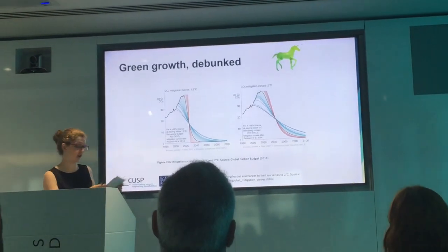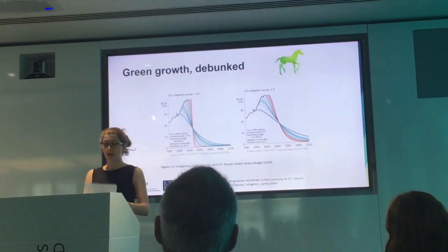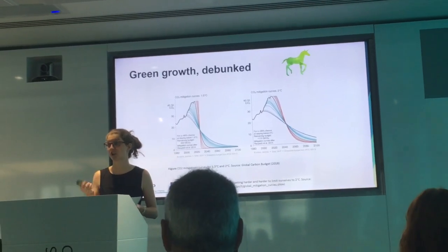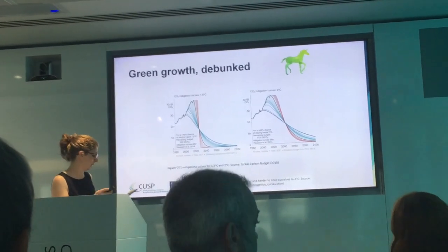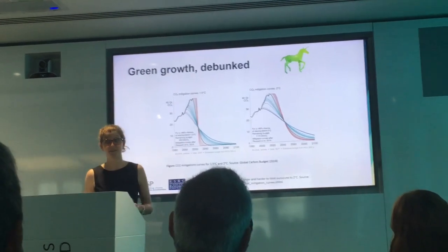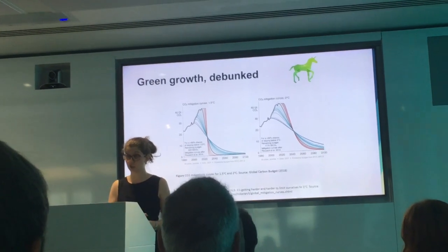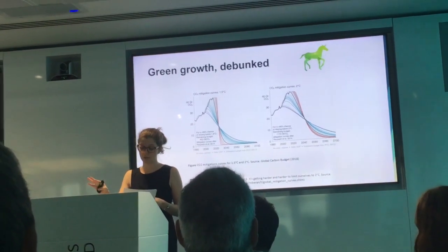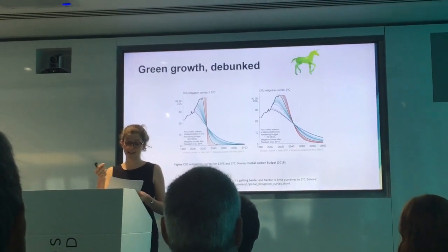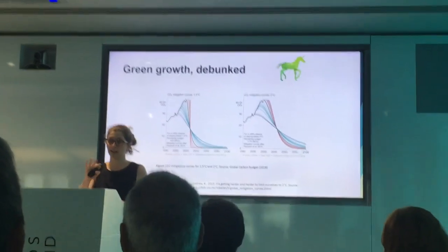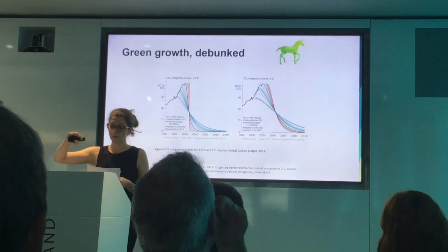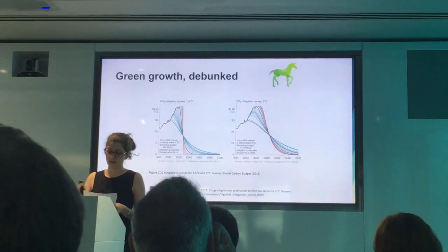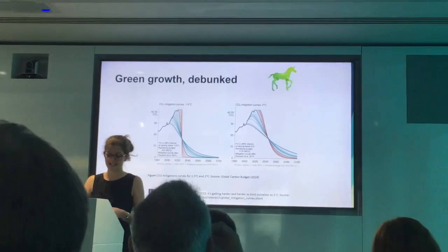Before we look at the evidence for absolute decoupling, I just want to take a moment to reiterate some of what's already been said today about the scale of what we're trying to achieve through this decoupling process. The best models that we have to date put our total global carbon budget for a 1.5 degree warming target at something in the region of 400 to 600 billion tonnes of carbon. The IPCC says that basically we have a 66% likelihood of remaining below 1.5 degrees of warming if and only if we are able to limit the total stock of carbon emitted into the atmosphere to below 420 billion tonnes.